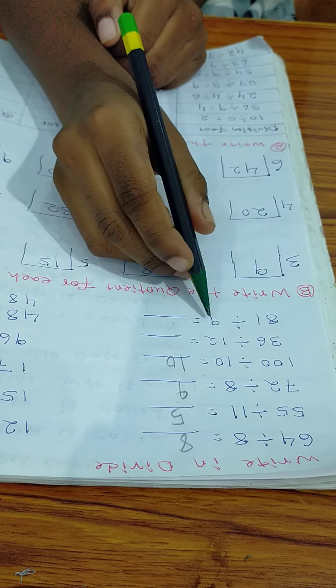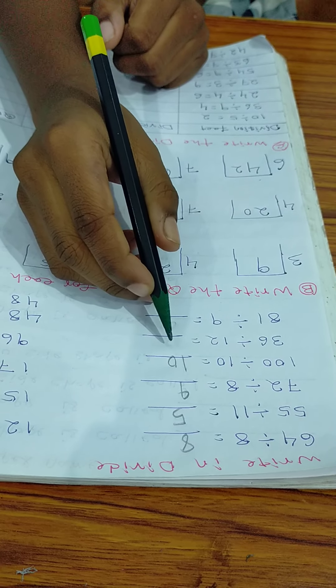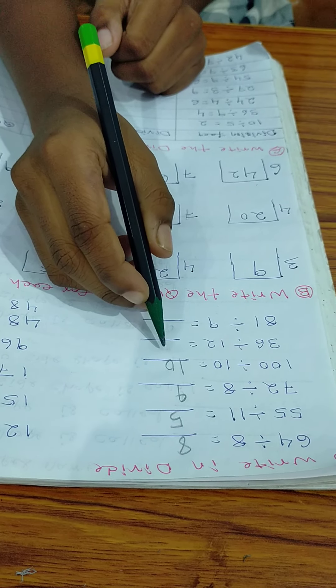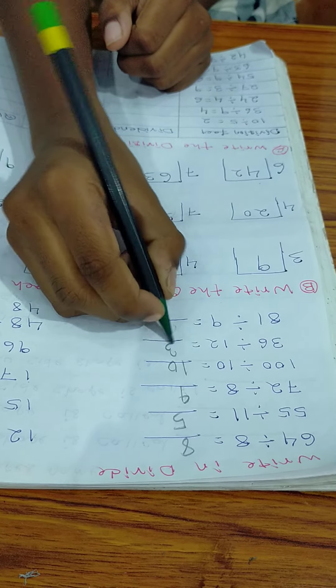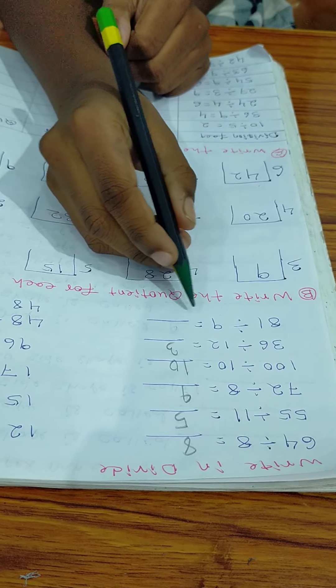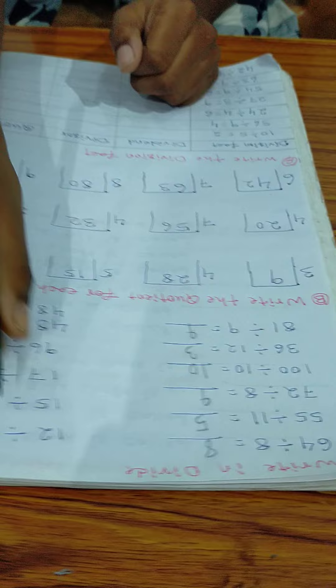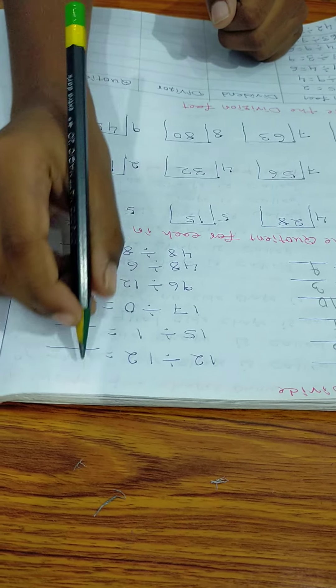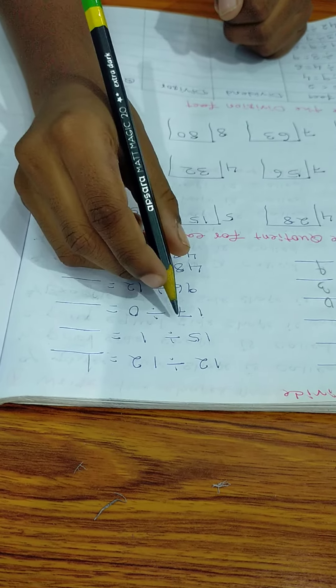100 divide 10 is equal 10. 56 divide 12 is equal 3. 81 divide 9 is equal 9.